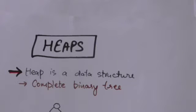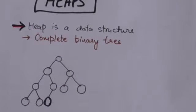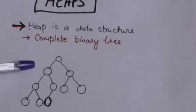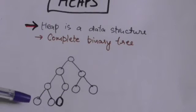Hello friends, welcome back. In this tutorial we will study about heaps. What is a heap? Heap is a data structure and it is a complete binary tree. We know that the complete binary tree is completely filled on all levels except possibly the last, which is filled from left up to a point.